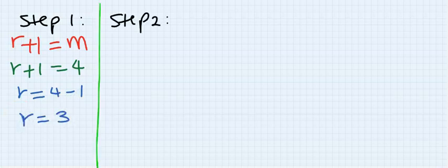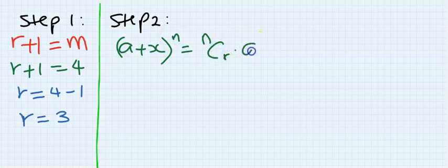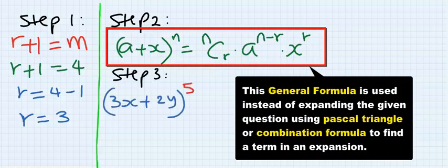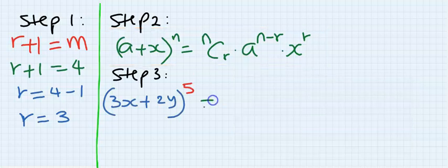Step two: write the general formula. (a + x) to the power of n equals n-combination-r times a to the power of (n minus r) times x to the power of r. This is the general formula.